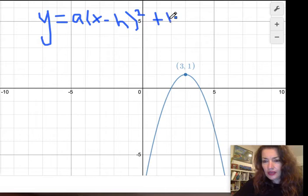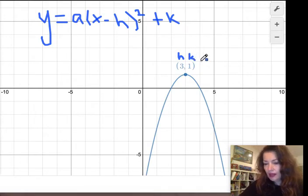In this case we know that our h, k is 3, 1, which happens to be our vertex, so we can already use that to plug that point into the equation.